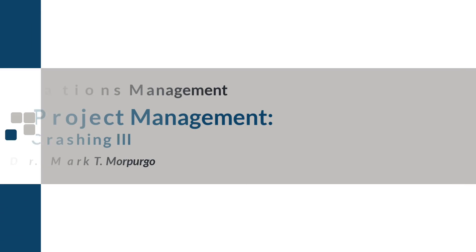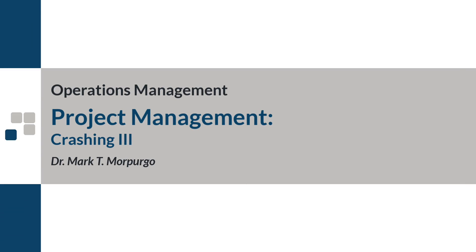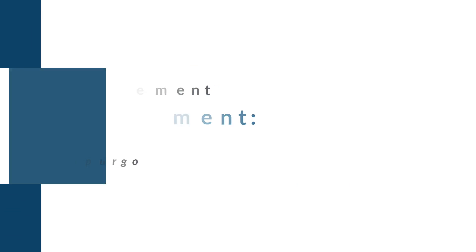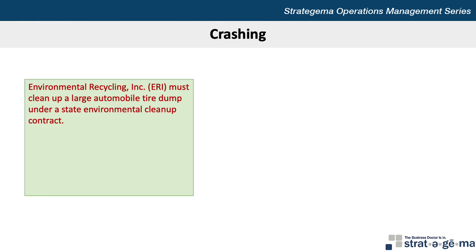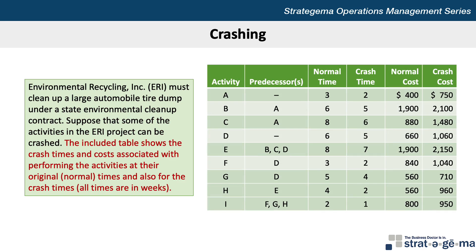This problem walkthrough video will demonstrate how to crash a project after drawing the network diagram and determining the critical path. Here's the data for our problem. Environmental Recycling Inc must clean up a large automobile tire dump under a state environmental cleanup contract. Some of the activities in the ERI project can be crashed. The included table shows the crash times and costs associated with performing the activities at their original normal times and also for the crash times. All times are in weeks.